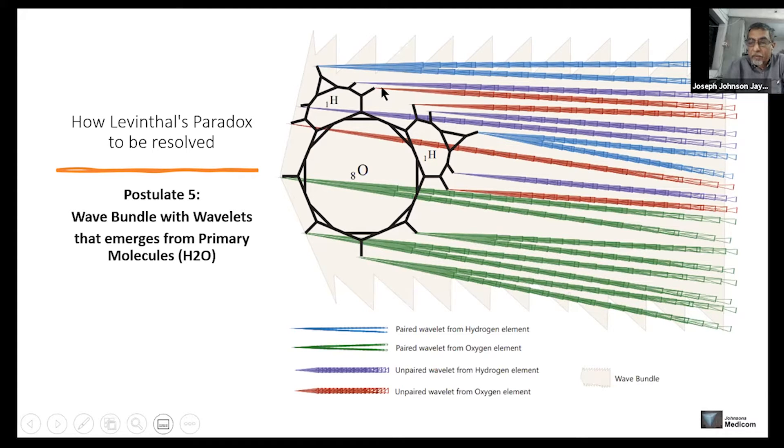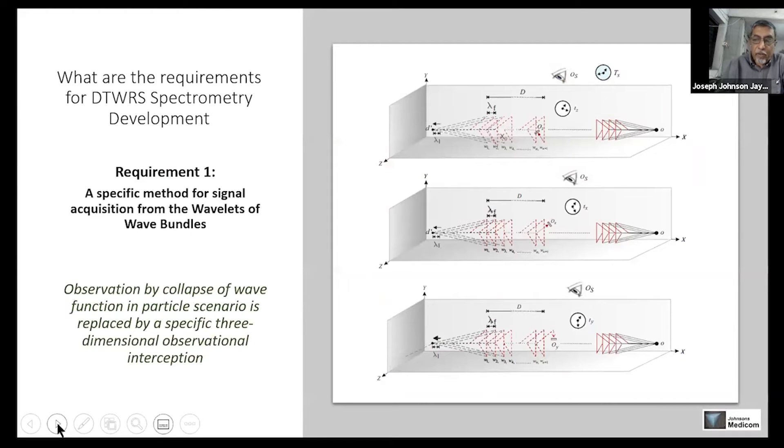Whereas the other strings that are free, when it joins with the oxygen molecule, are unpaired. So in total, there is a bundle of wavelets that propagates in a bundle that is unique for each molecule. With that, we can identify which molecule the signal is coming from.